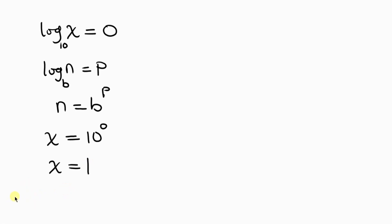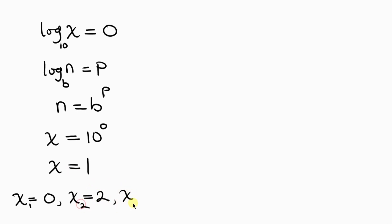So we have three values for x: the first value is x equals 0, the second value is x equals 2, and the third value is x equals 1. Let's now check our solutions to see if they are correct.